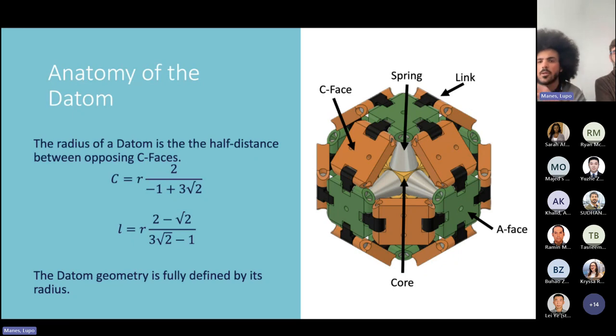The datum can be fully defined by its radius, which is the half distance between opposing C phases. The length of the C and A phase is exactly the same and is expressed by the equation C = R / (-1 + 3√2), and the length of the link is L. So this is the datum, these are the most important components.